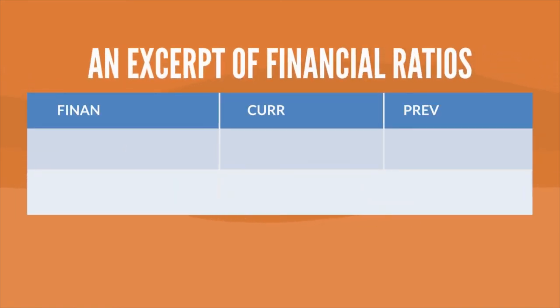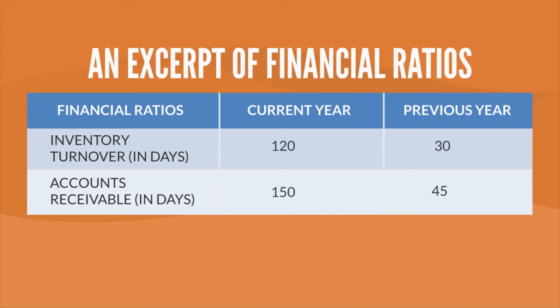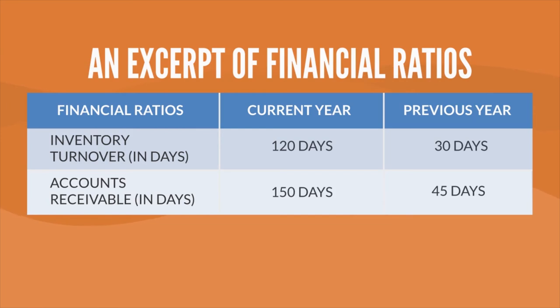A simple example of an analytical procedure: inventory turnover has increased from 30 days to 120 days, and accounts receivable have also increased from 45 days to 150 days. What would this mean and how should the auditor respond? It simply means there is a probability that the client is not capable of selling their product due to a decline in market demand, product obsolescence, or unquality products. Therefore, auditors need to be more focused on this particular account, ensuring that the management assertions — especially on valuation — reflect a true and fair view on inventory, by carrying out more substantive audit procedures.